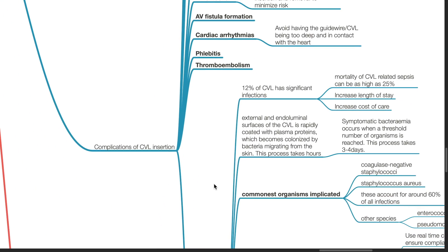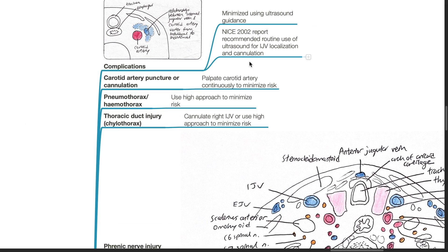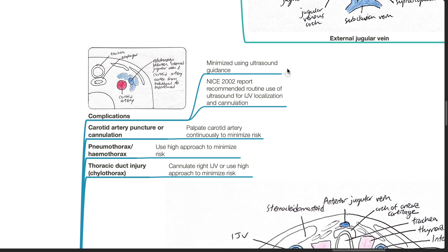Complications of central venous line insertion are minimized using ultrasound guidance, due to the variation between the position of the internal jugular vein and the carotid artery. The NICE guideline report in 2002 recommends routine use of ultrasound for IJV localization and cannulation.